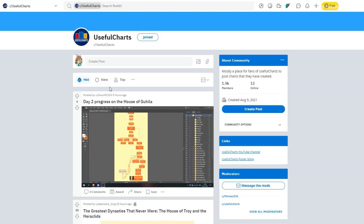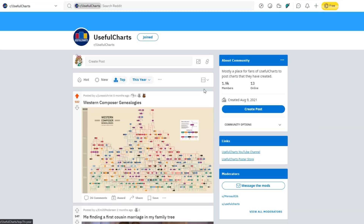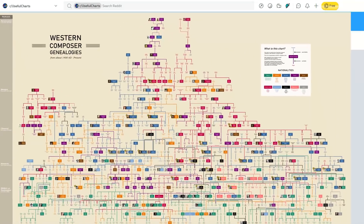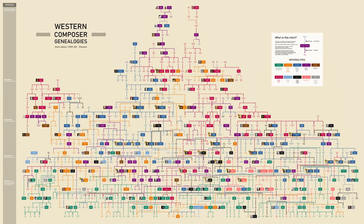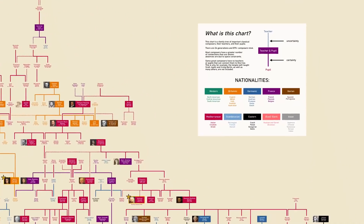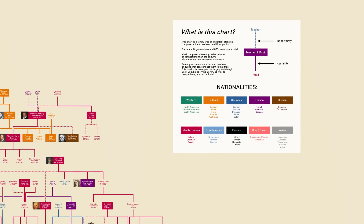I'll start by clicking the top button and then switching it from today to this year. Doing this reveals that the top post of 2021 was this chart called Western Composers Genealogies. Let's zoom into this chart. And I gotta say, just from the sheer size of this chart, this thing is amazing. I can't imagine the amount of time and energy that went into creating this. Let's start by taking a look at the legend in the top right corner.